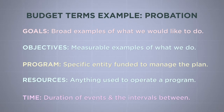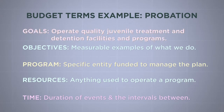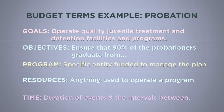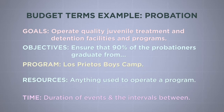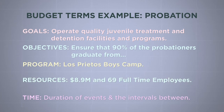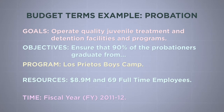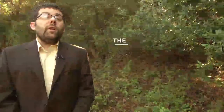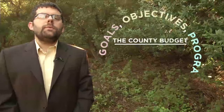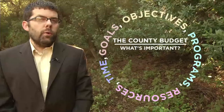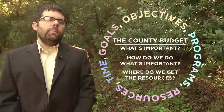For example, in the 2011-2012 county budget book, the probation department said one of their goals was to operate quality juvenile treatment and detention facilities and programs. An objective for this goal was to ensure that 90% of the probationers graduated from the Los Prietos Boys Camp program. Their resources for operating this program included $8.9 million in funds and 69 employees allocated to juvenile services in fiscal year 2011-2012. So that's the county budget in a nutshell: goals, objectives, programs, resources, and time that address what the county thinks is important, how they plan on doing what's important, and where they plan on getting the resources.